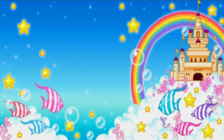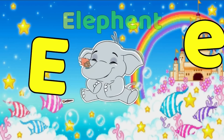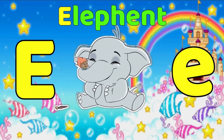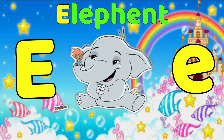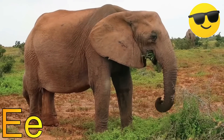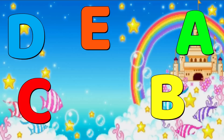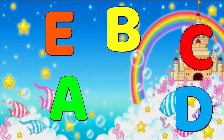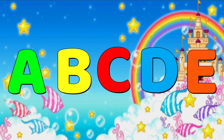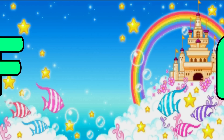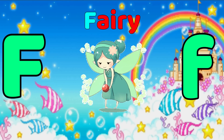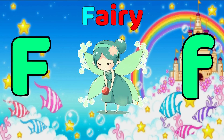E is for Elephant. E, Elephant. F is for Fairy. F, Fairy.